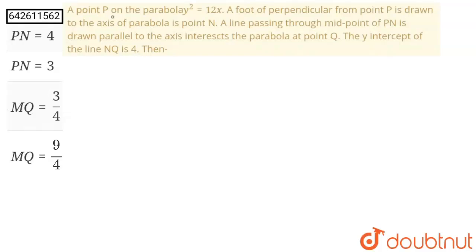Hello students. Here the question is: a point P is on parabola y squared equals 12x. A foot of perpendicular drawn from point P to the axis of parabola is point N. A line passing through the midpoint of PN is drawn parallel to the axis and intersects the parabola at point Q. The y-intercept of line NQ is 4. Find which of the following options is correct.